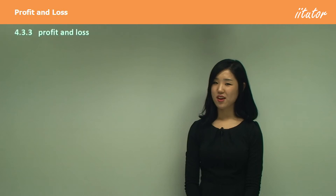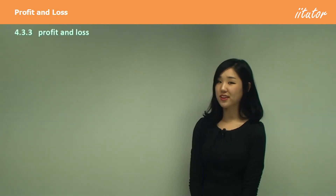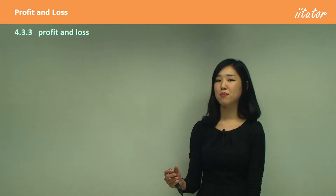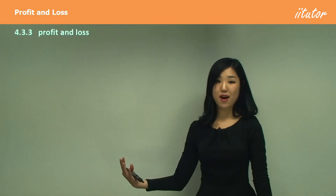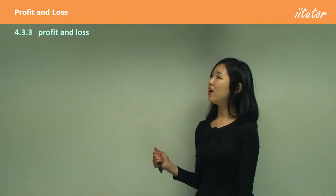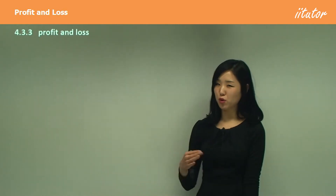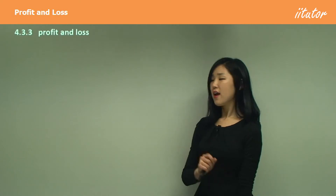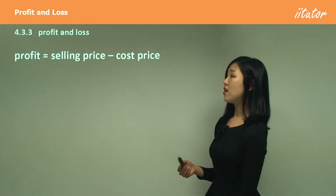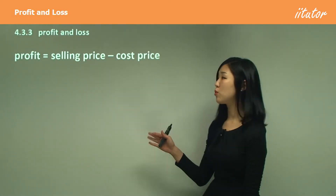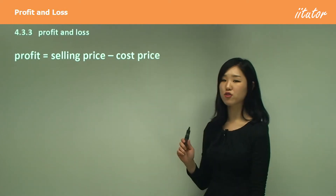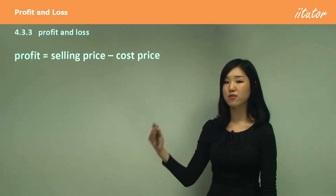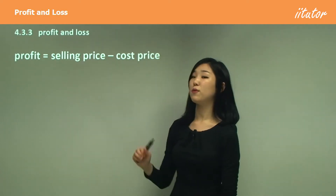Now let's look at profit and loss. We all probably already know what profit and loss is. Profit is when we make extra money — when we sell something for a higher price than we bought it. And loss is the opposite: we lose some money because we sell it for cheaper than what we bought it. Starting off with profit, it's the difference between your selling price and cost price. What you bought it for is lower than what you sold it for, and the difference will be your profit.